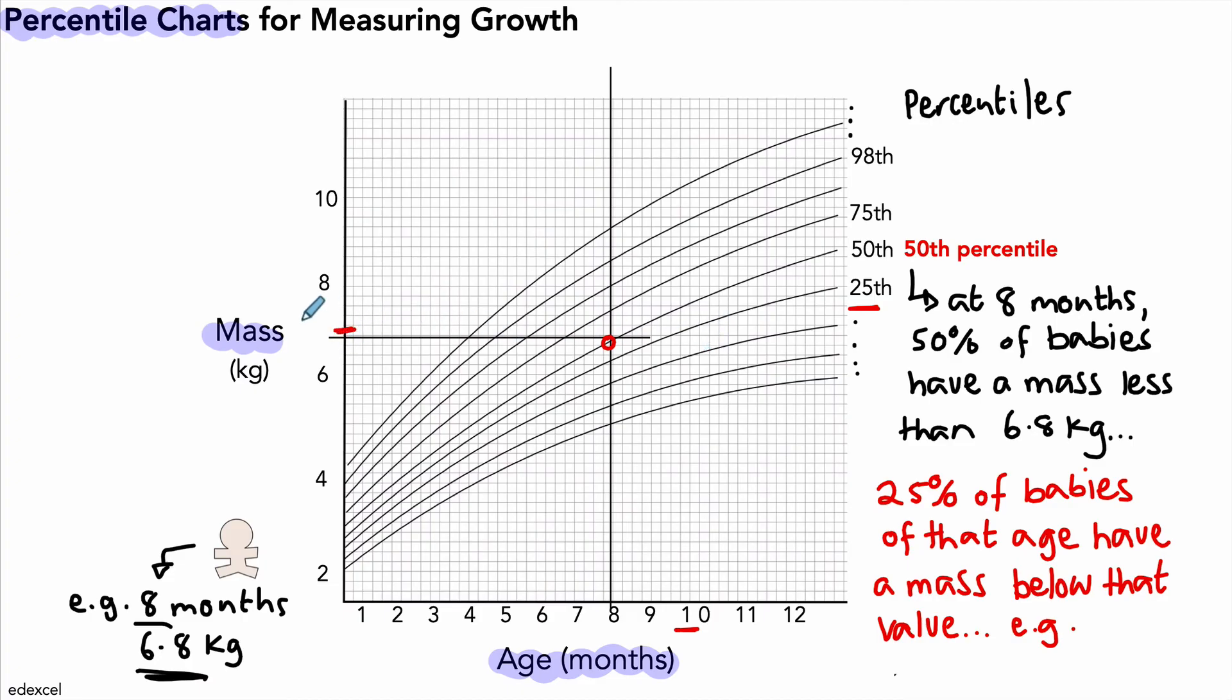...7 kg. If we draw a line across, we can see that value falls on the 25th percentile, and that means 25% of babies of that age have a mass below 7 kg. That gives you an idea of where the baby is in terms of the rest of the babies across the country.